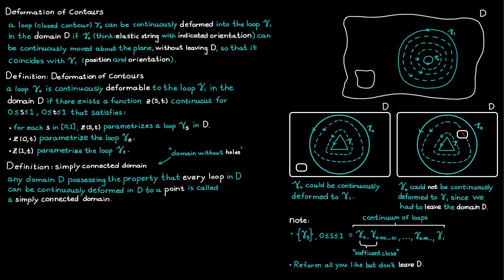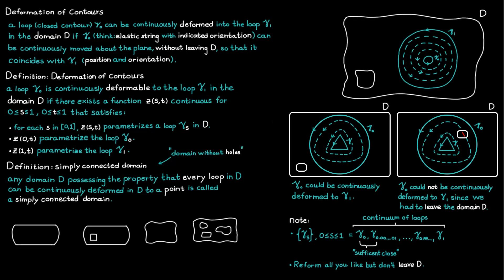Using this definition, we can state which domains are simply connected. The first domain has no holes, so it is simply connected. The second one has a hole, so it is not simply connected. The third one has no holes, so it is simply connected. And the last one has multiple holes, so it is not simply connected.